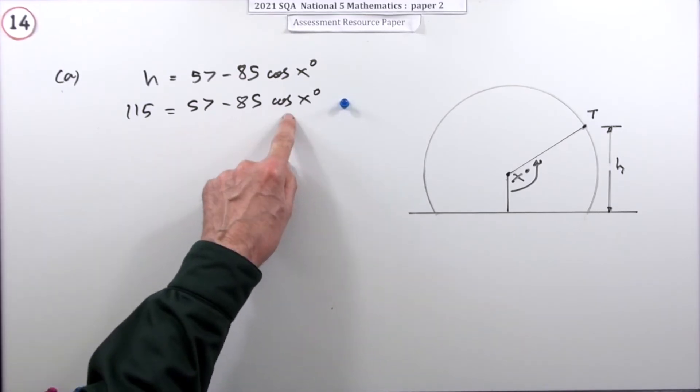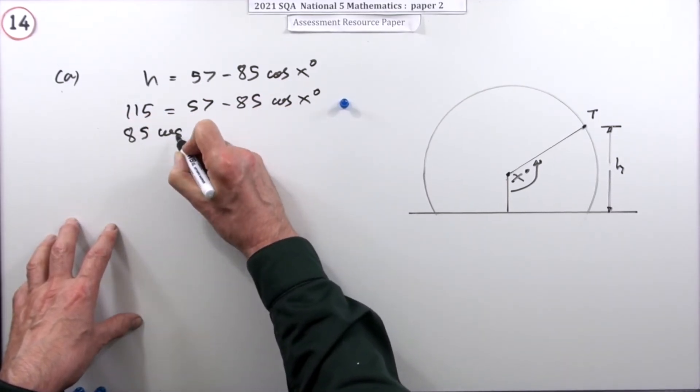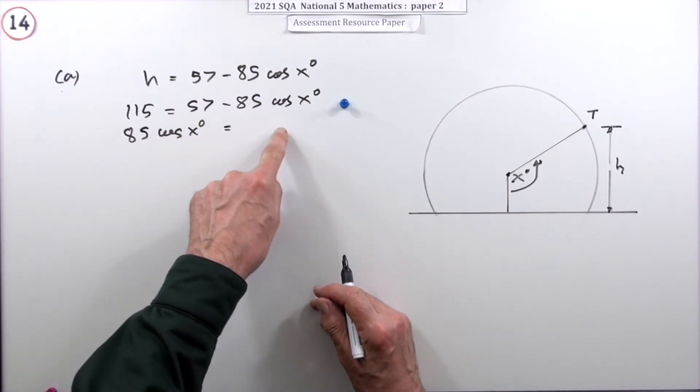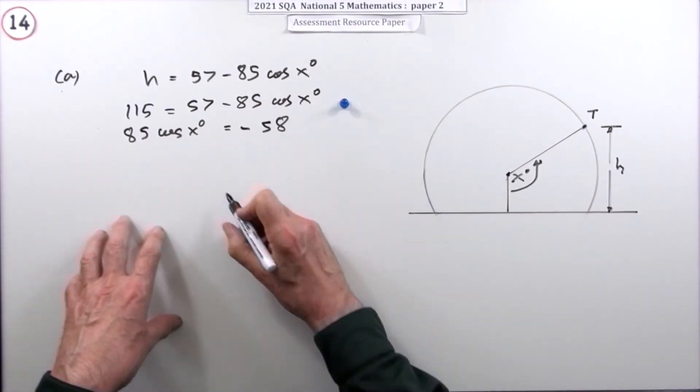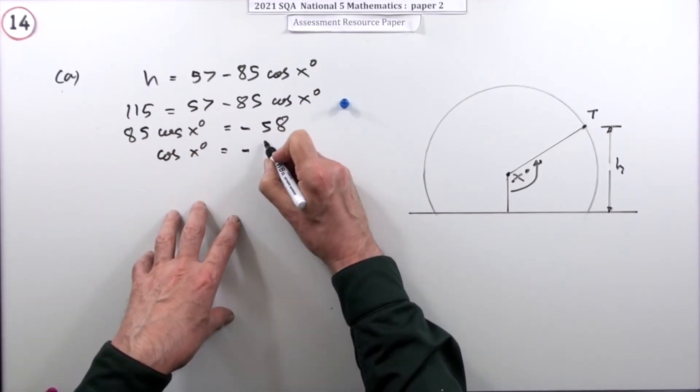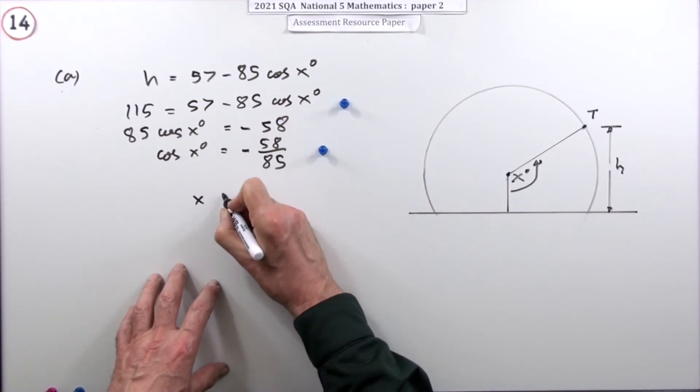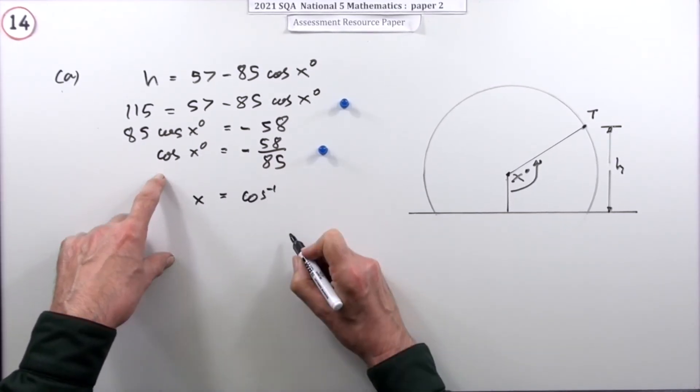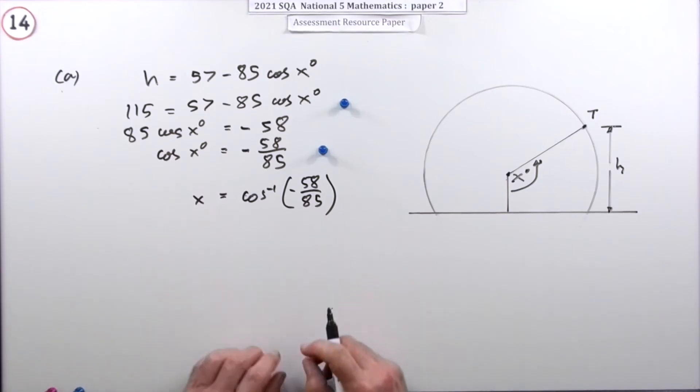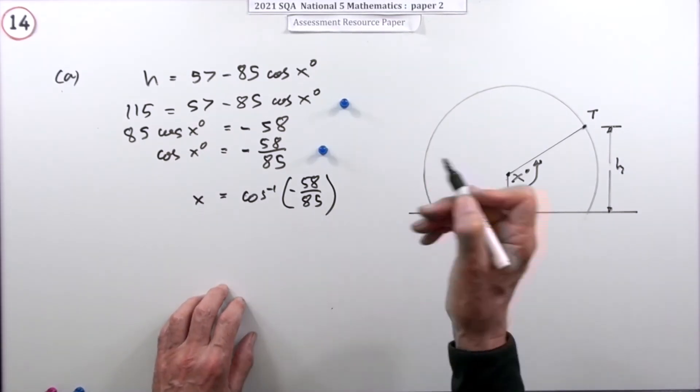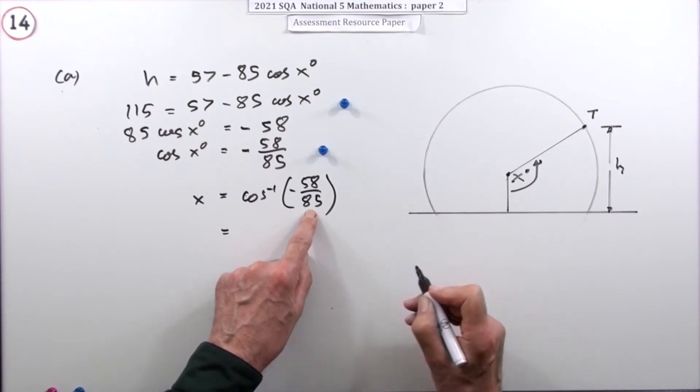115 equals 57 minus 85 cos x. Just doing that in part A gets the first mark. There's only one unknown, so you just get rid of all the bits and pieces. Bringing that over, I've got 85 cos x equals 57 minus 115, or just subtract it straight away, so it's going to be minus 58. So cos x is going to be negative 58 upon 85 - that gets a mark. To get x itself, I'm going to do inverse cos of negative 58 upon 85. Putting that into your calculator will give you the right answer, but it's not going to help you with the second bit. You're as well just doing the standard way of taking the positive amount and using your CAST diagram.